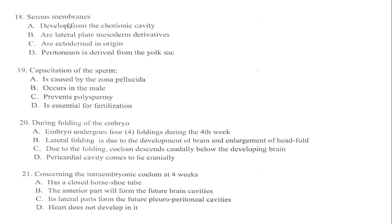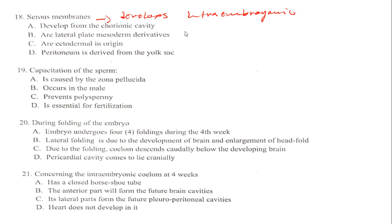Regarding serous membrane: does it develop from the coelomic cavity? Is it a lateral plate mesoderm derivative? Is it ectodermal in origin? Or is the peritoneum derived from the yolk sac? The serous membrane normally develops from the intra-embryonic coelom, which is closely related to the lateral plate mesoderm — the lateral plate mesoderm is divided into two layers. So the answer is B.